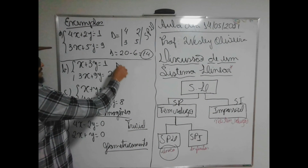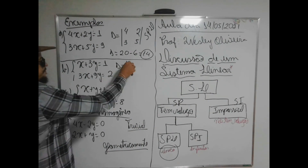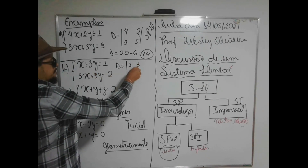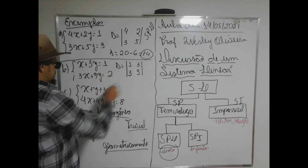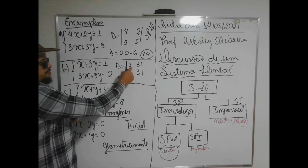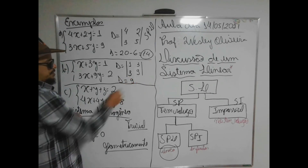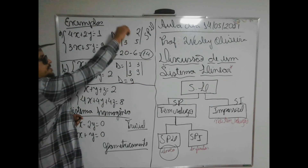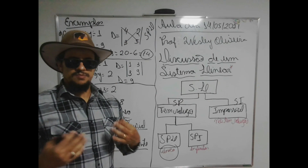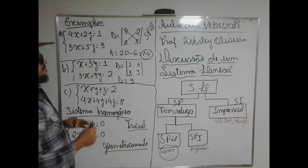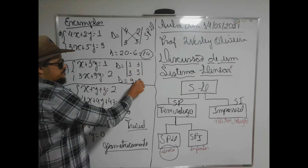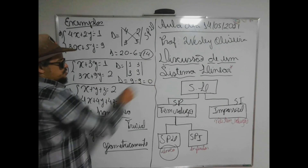Vou calcular o delta da letra B: temos 1 e 3, 3 e 9. Delta igual a 1 vezes 9 é 9; 3 vezes 3 é 9. Dá 9 menos 9, que é 0.